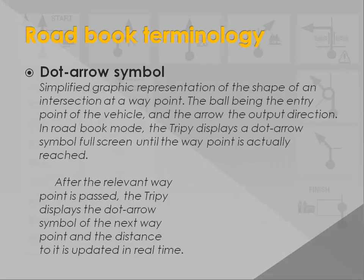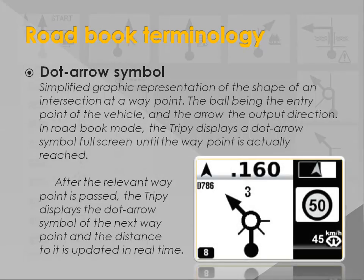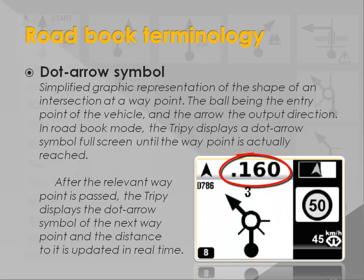A dot-arrow symbol is a simplified representation of an intersection at a waypoint. The dot represents the entry point of the vehicle and the arrow the exit point. Trippi displays a clear and large dot-arrow symbol until the intersection is reached. After that point is passed, Trippi displays the dot-arrow symbol of the next waypoint.